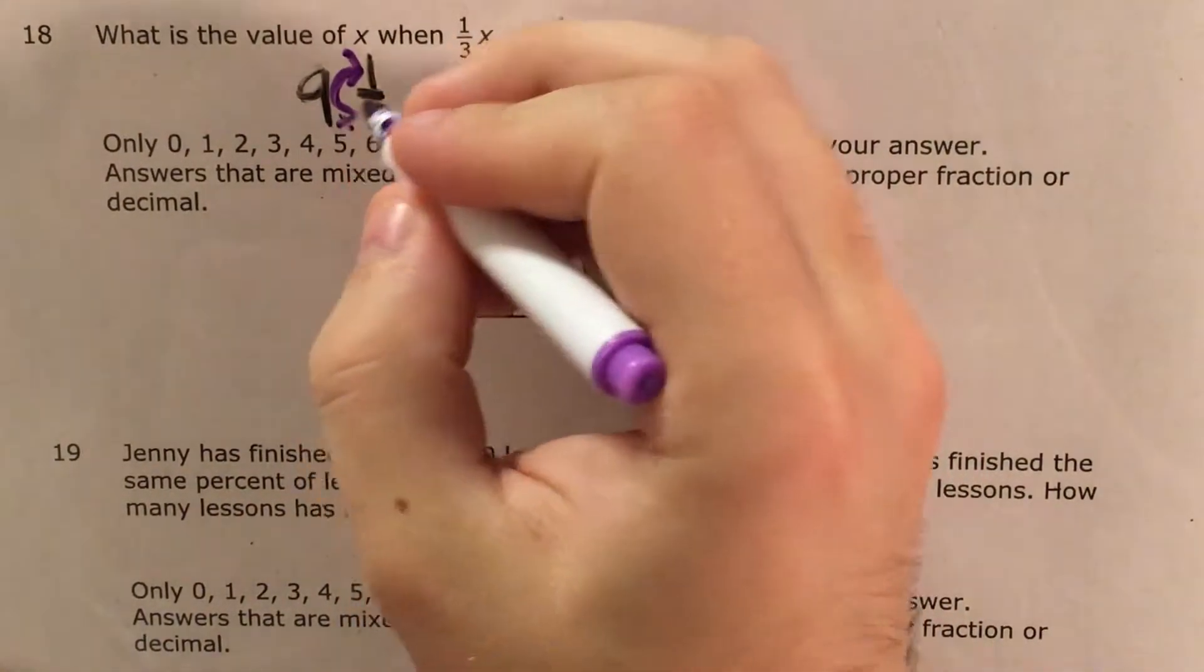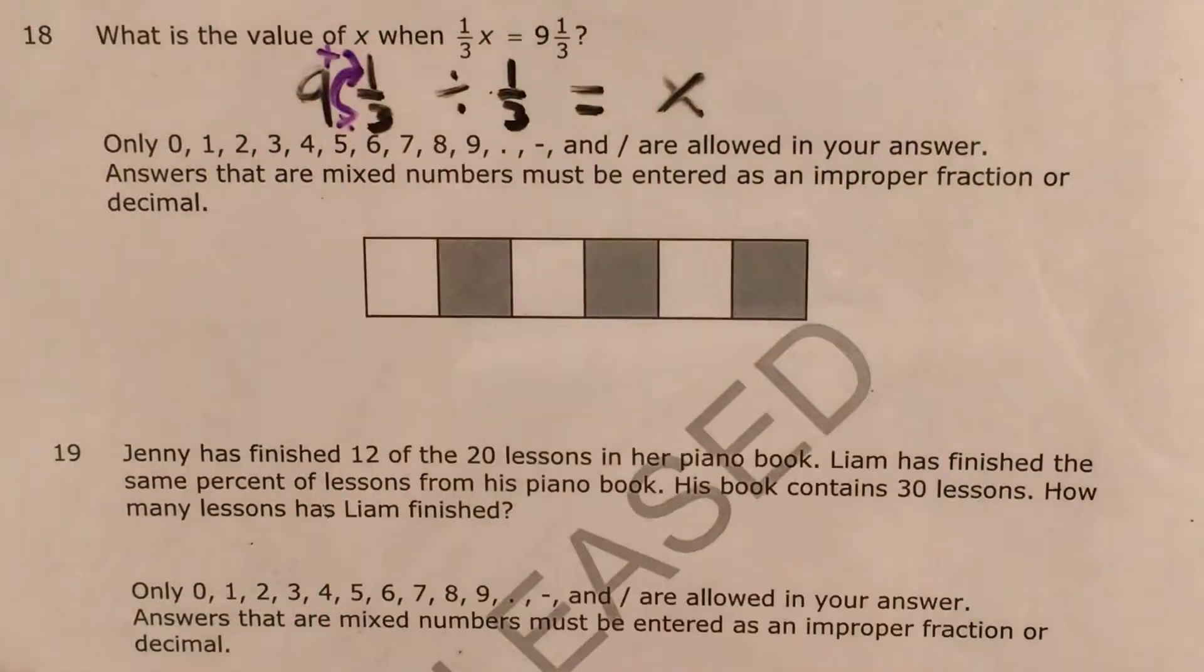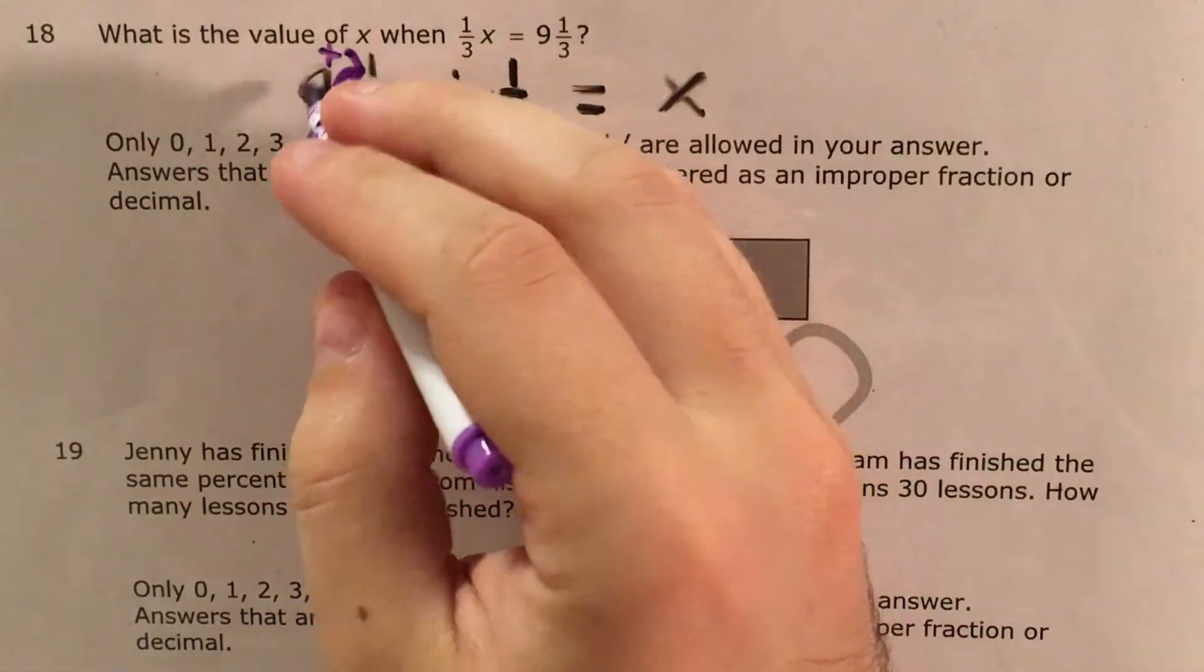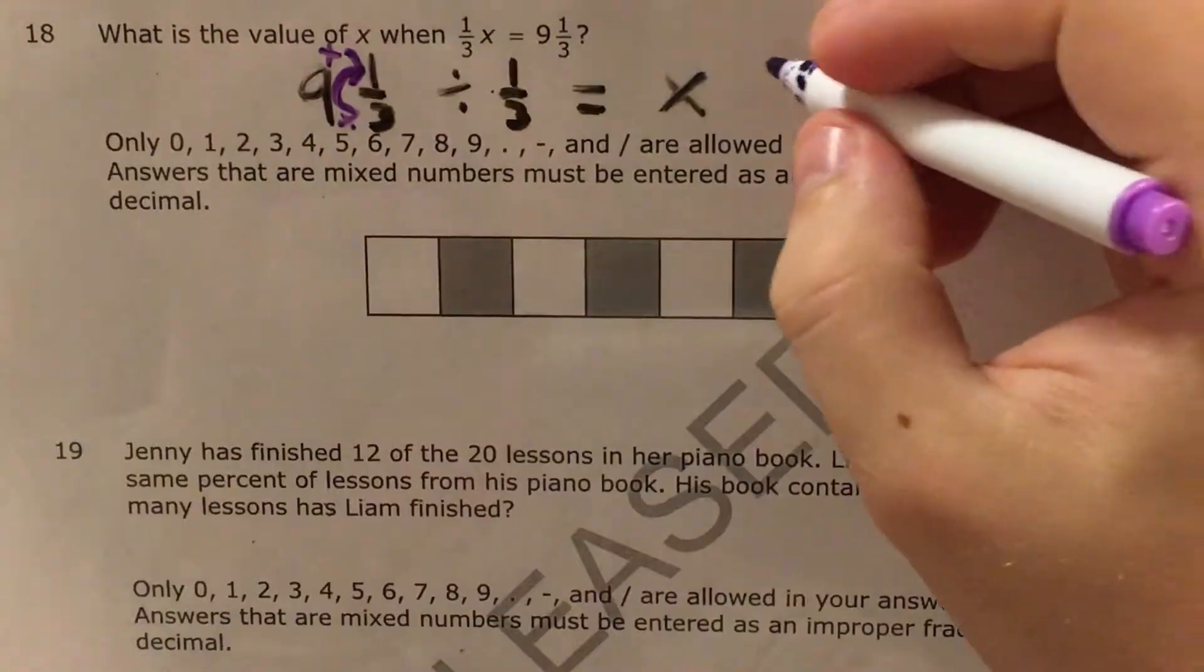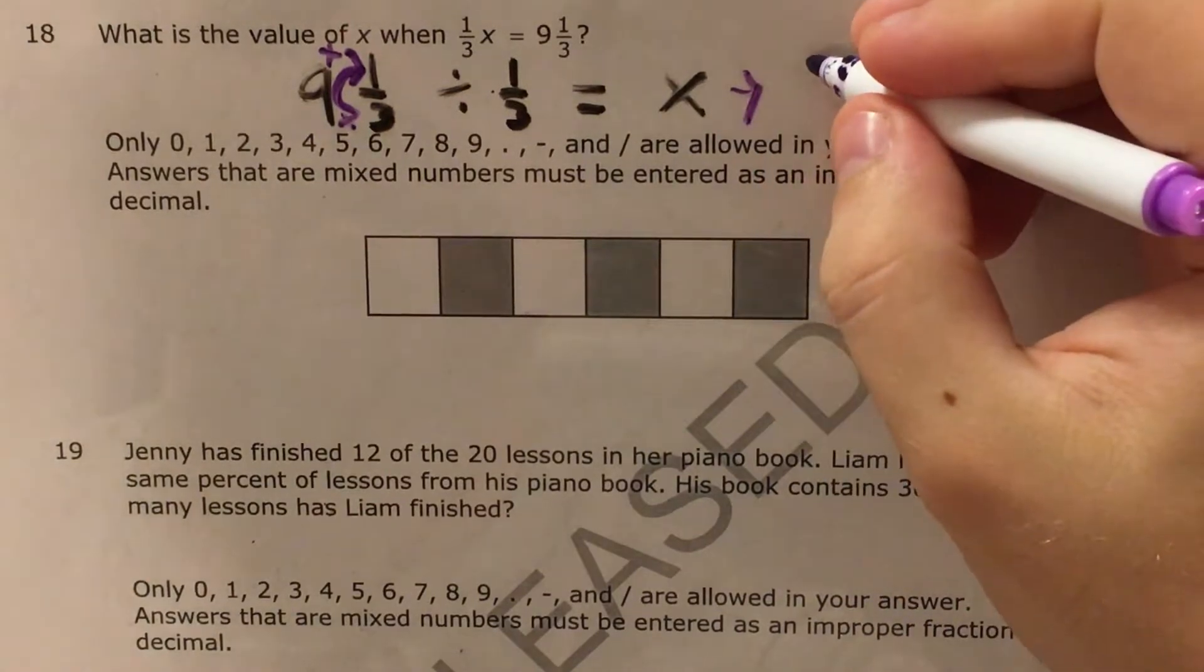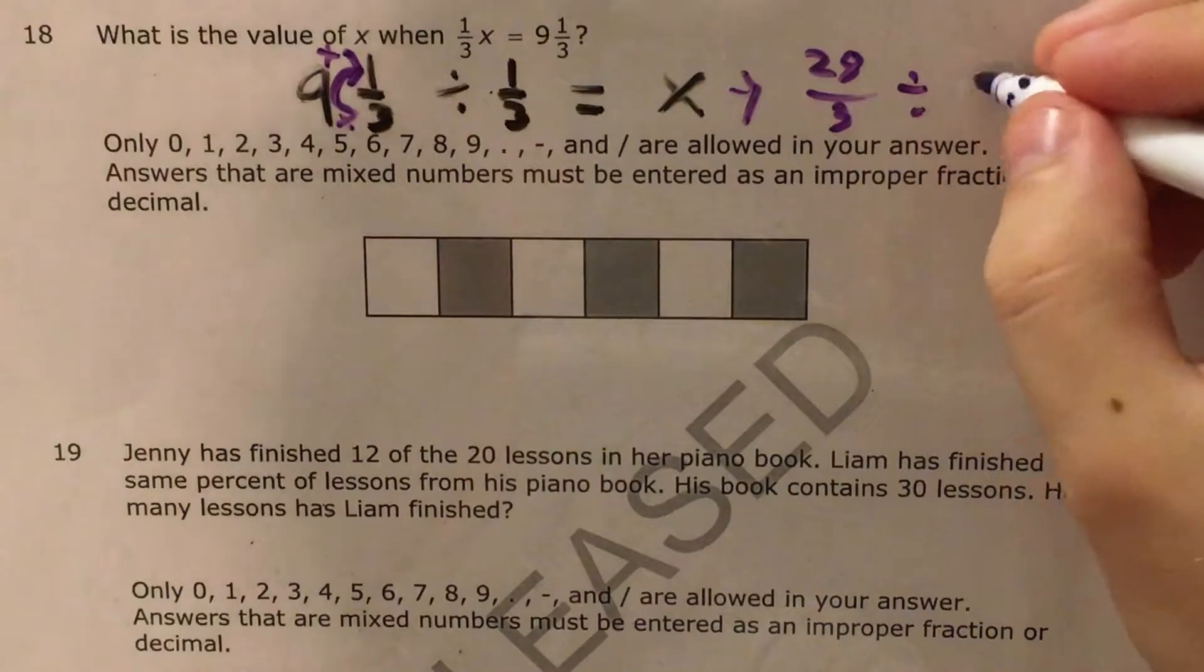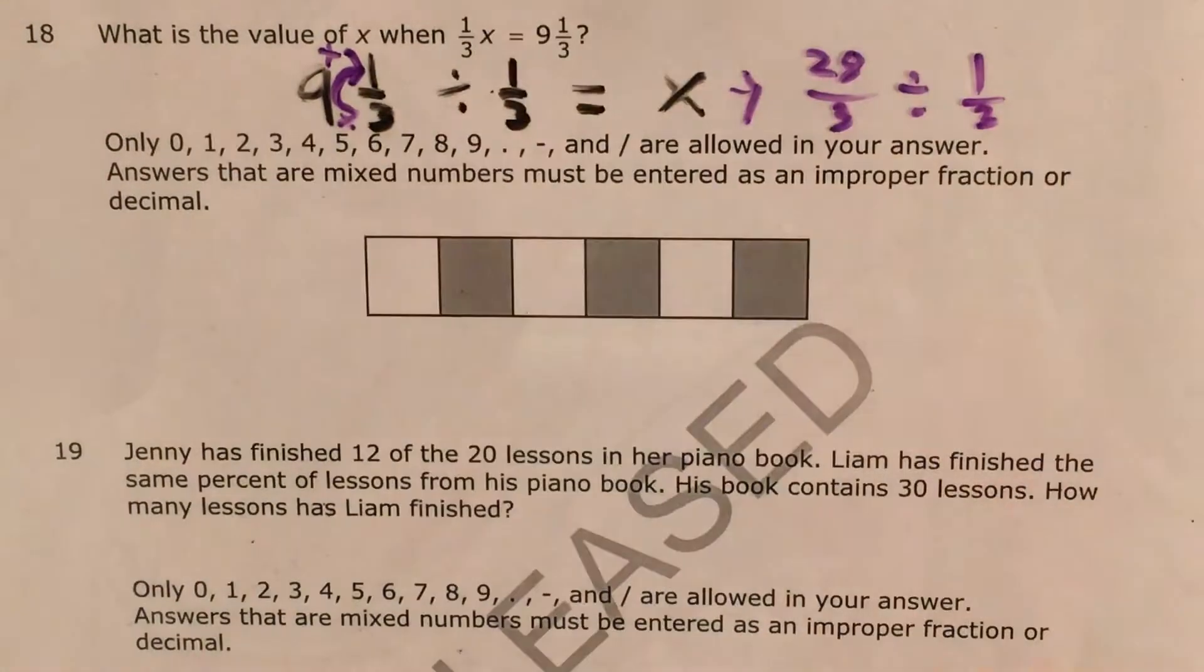So I'm going to multiply 3 times 9 and add 1. Whether you use your calculator or not, that's fine. But 3 times 9 is 27 plus 1 is 28, which leads me to 28/3 divided by 1/3.